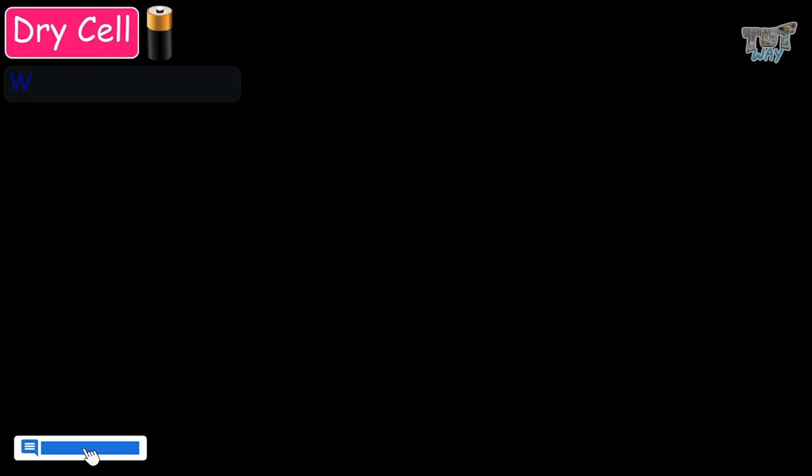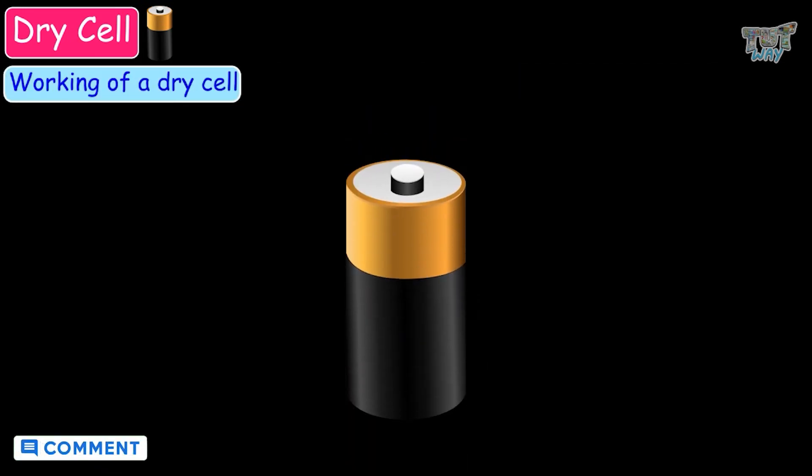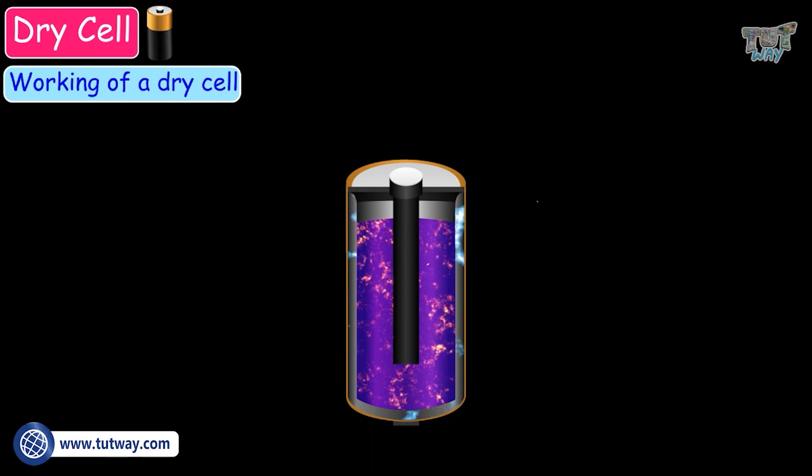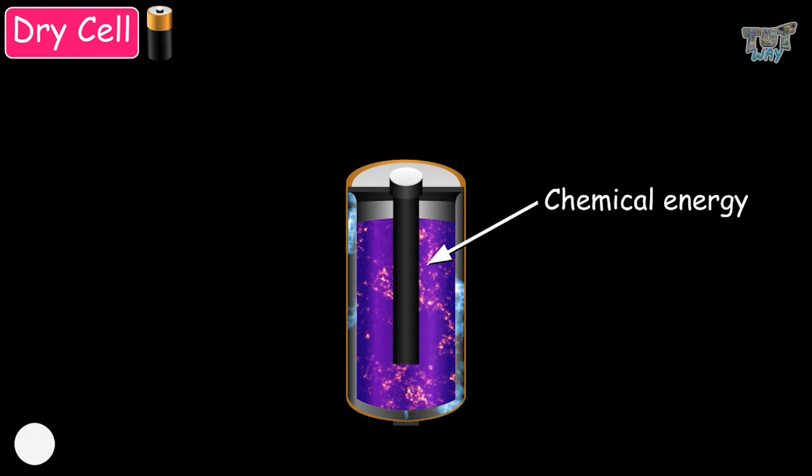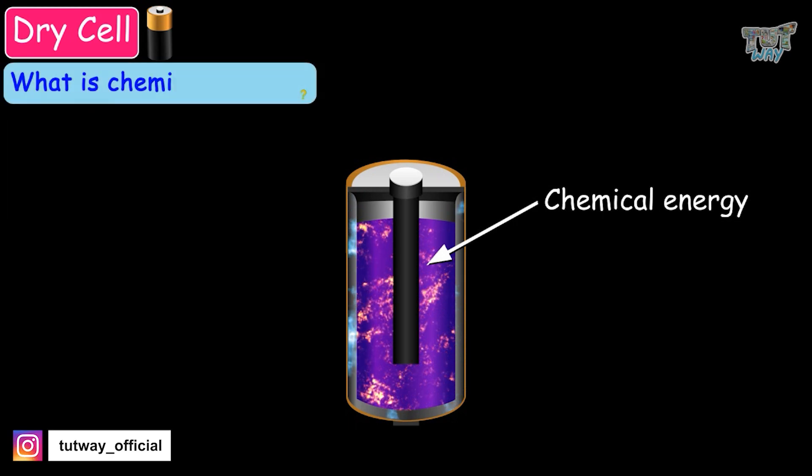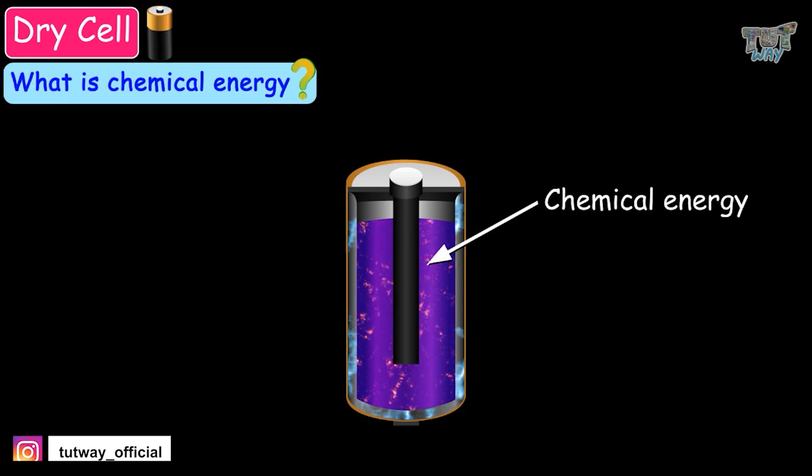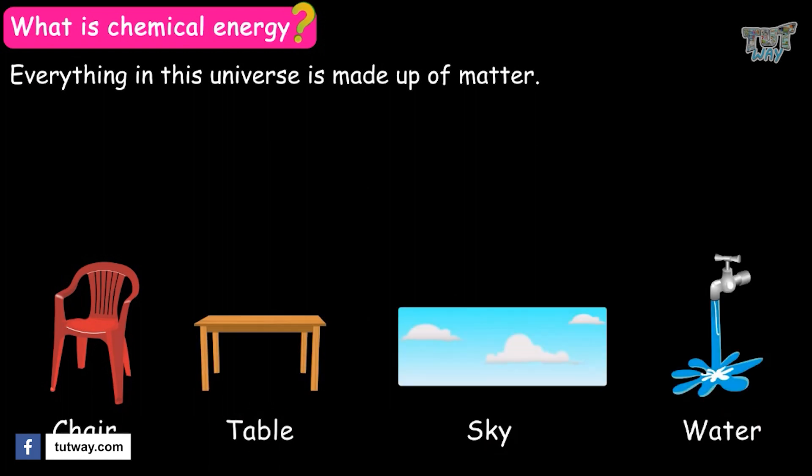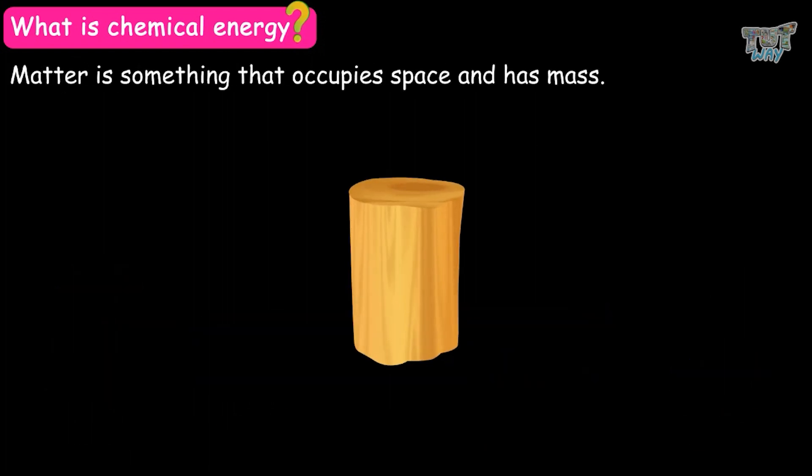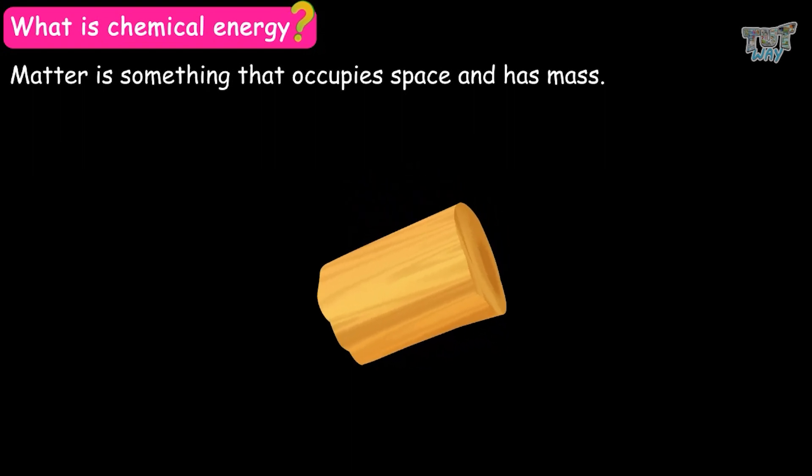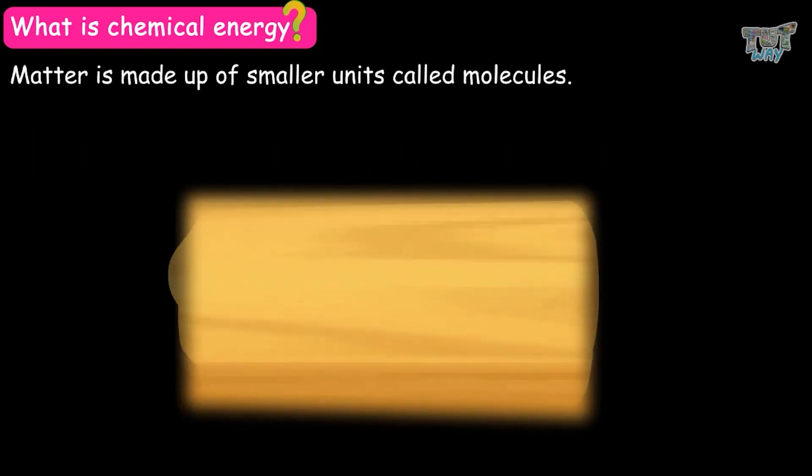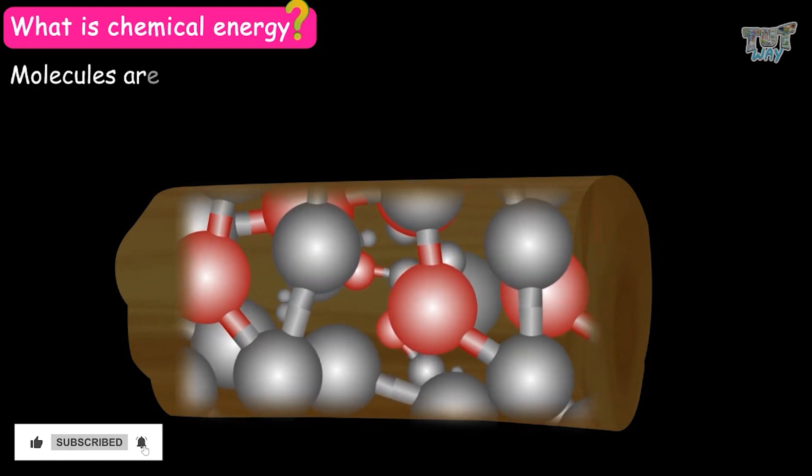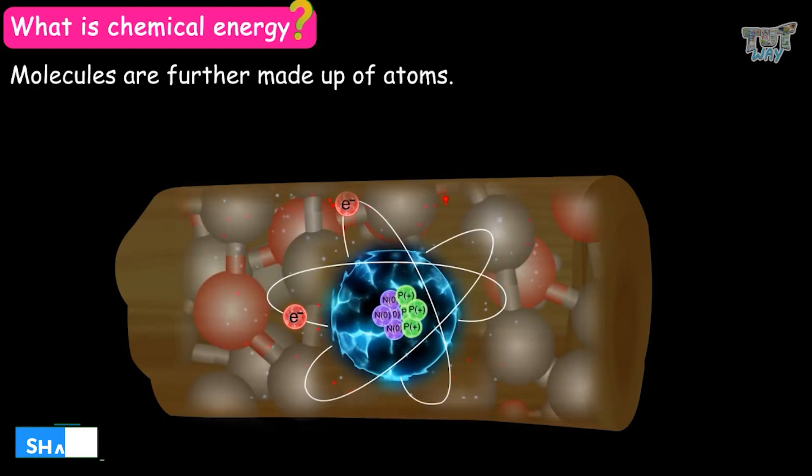Now, we will be learning the working of a dry cell. Energy is stored inside a dry cell in the form of chemical energy. Now the question that arises here is, what is chemical energy? We know everything in this universe is made up of matter. A matter is something that occupies space and has mass. Matter is made up of smaller units, called molecules. And molecules are further made up of atoms.